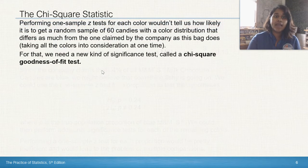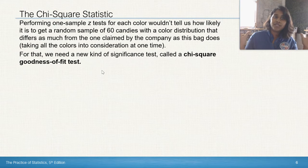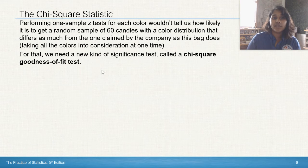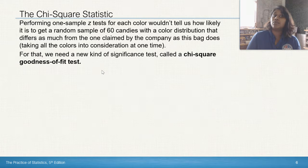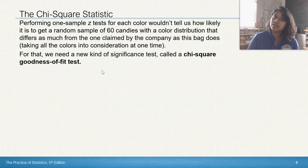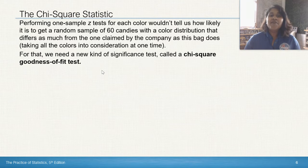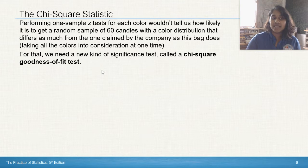So instead, they have the chi-square goodness-of-fit test. Instead of performing one sample Z test for each color, because it's not going to tell us how likely it is to get a random sample of 60 candies with a color distribution that differs as much from the one claimed by the company as this bag does, then we have to use this new significance test.